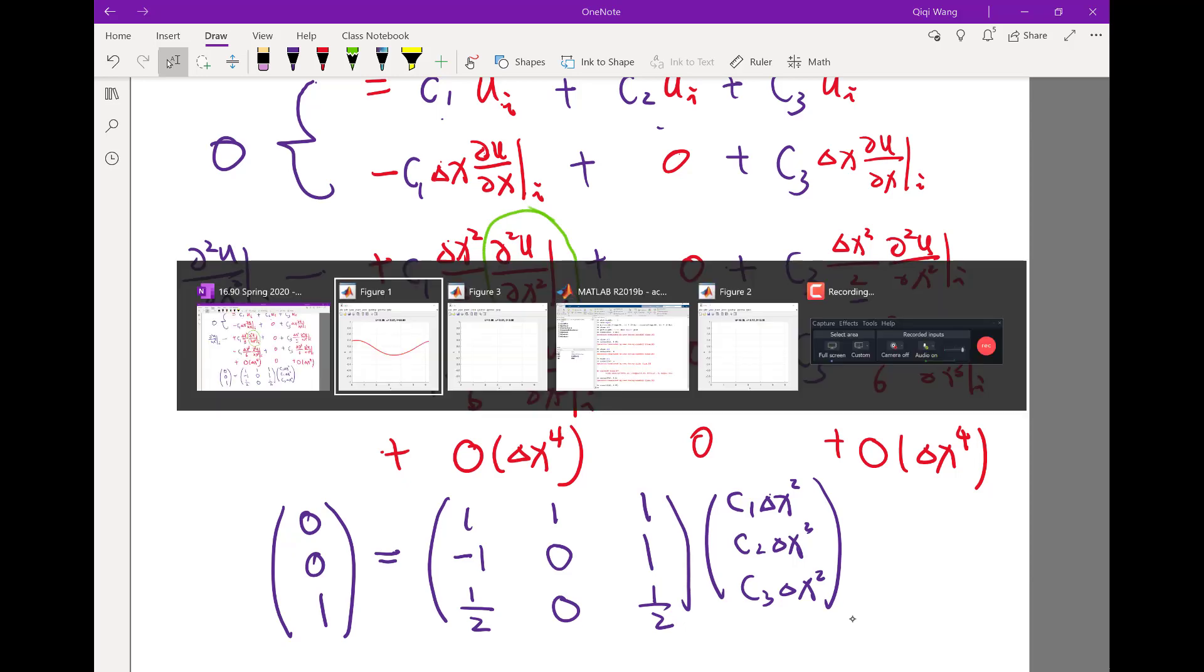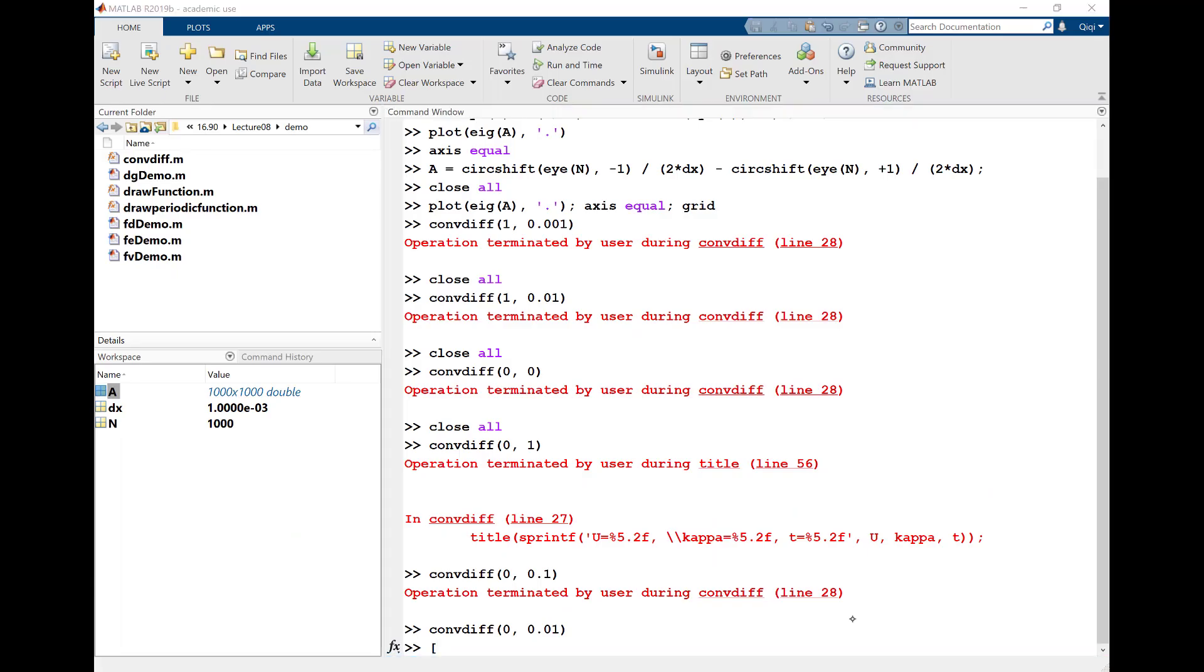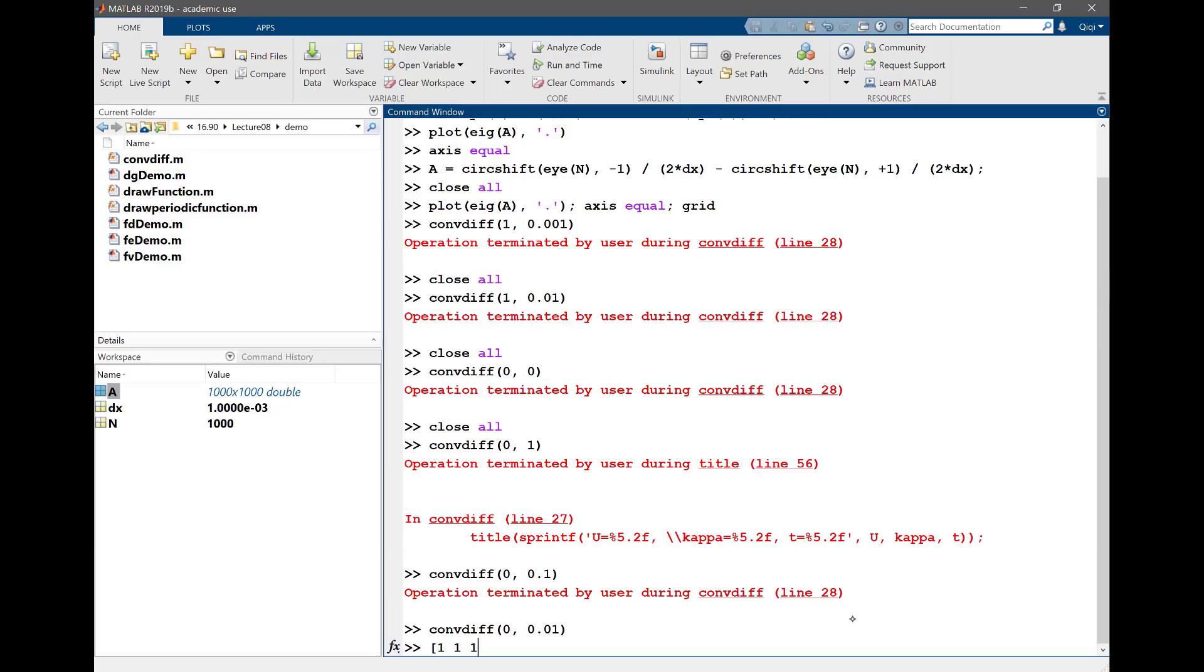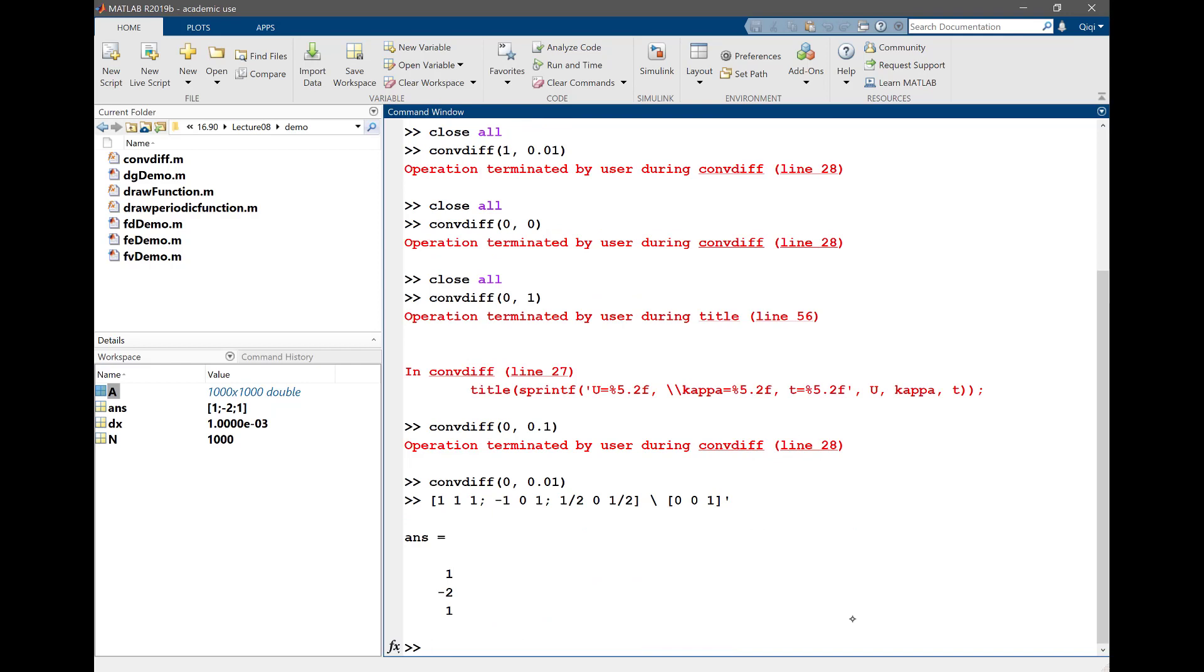Now I just go and solve it. The matrix is 1, 1, 1; minus 1, 0, 1; and half, 0, half. I'm going to backslash it with 0, 0, 1. I need to transpose it because I want to make it a column vector. I get 1, minus 2, and 1.